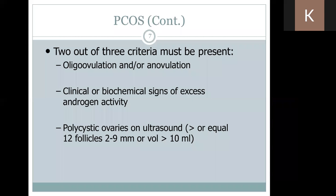Second, clinical and biochemical signs of excess androgen activity — meaning the patient has signs of too much androgen in the body, like acne, skin pigmentation, and excessive facial hair. And last but not least, the appearance of the ovaries on ultrasound, where we see a lot of small, tiny cysts measuring about 2–9 mm.